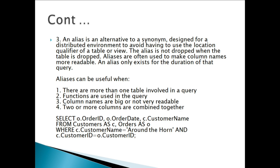The third concept is alias. An alias is an alternative to a synonym, designed for a distributed environment, to avoid having to use the location qualifier of a table or view. The alias is not dropped when the table is dropped. Aliases are often used to make column names more readable. An alias only exists for the duration of that query. Aliases can be useful when more than one table is involved in a query, when functions are used, when column names are long or not readable, or when two or more columns are combined together.